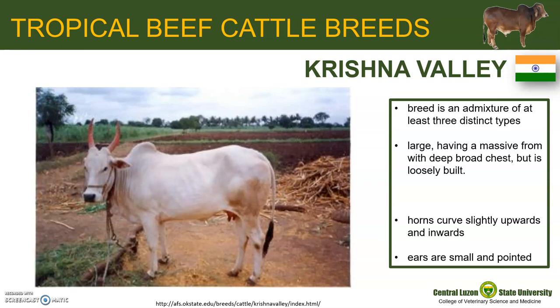The animal is large, having a massive deep broad chest but is loosely built. Their color is gray-white with a darker shade on the forequarters and hindquarters in males, while adult females look more white. The horns, when present, are curved slightly upwards and inwards. As you can see here, the ears are small and pointed.